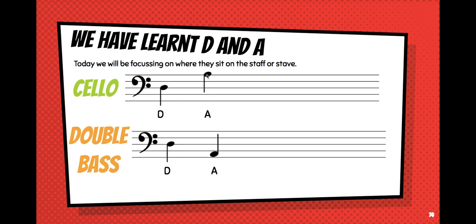If I'm playing a double bass, I have the same clef as the cello — the bass clef. My D sits in the same spot on the middle line, but my A is actually a lower pitch, so it's the octave down, and it sits in the bottom space, the first space.